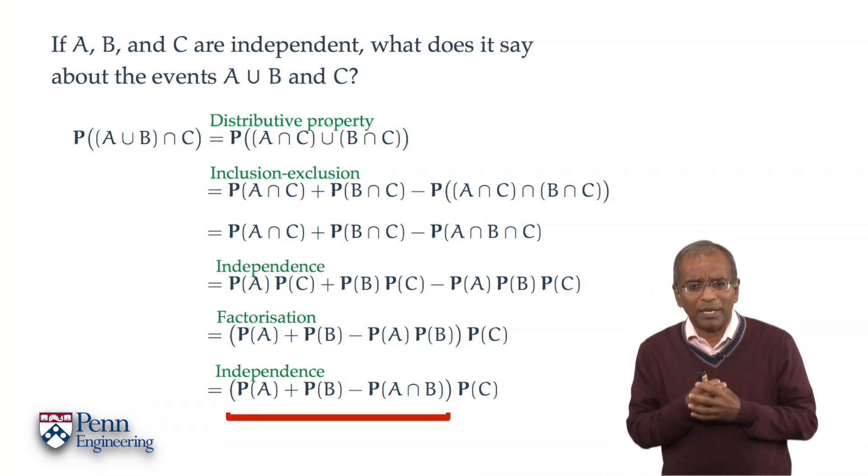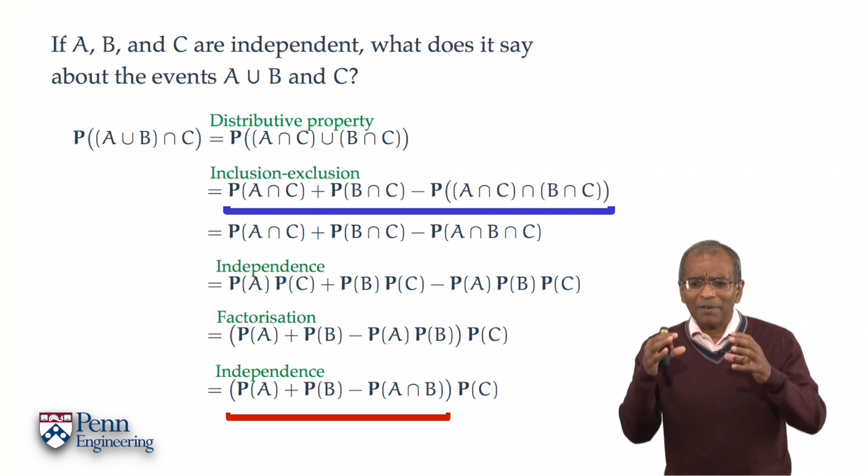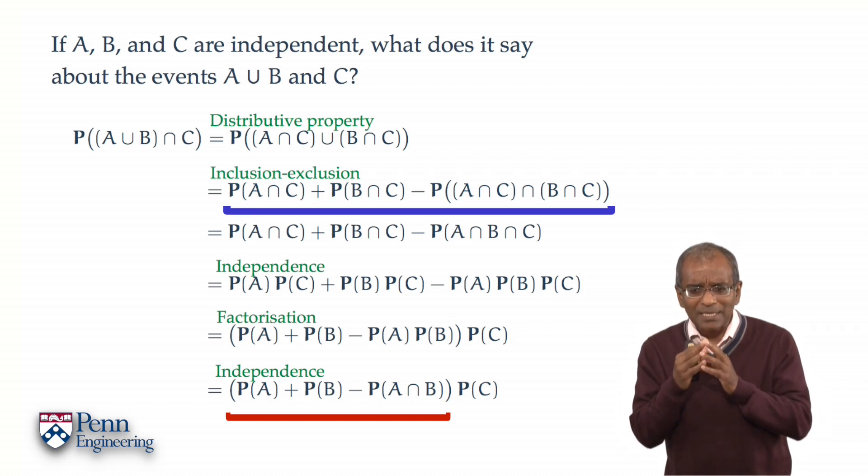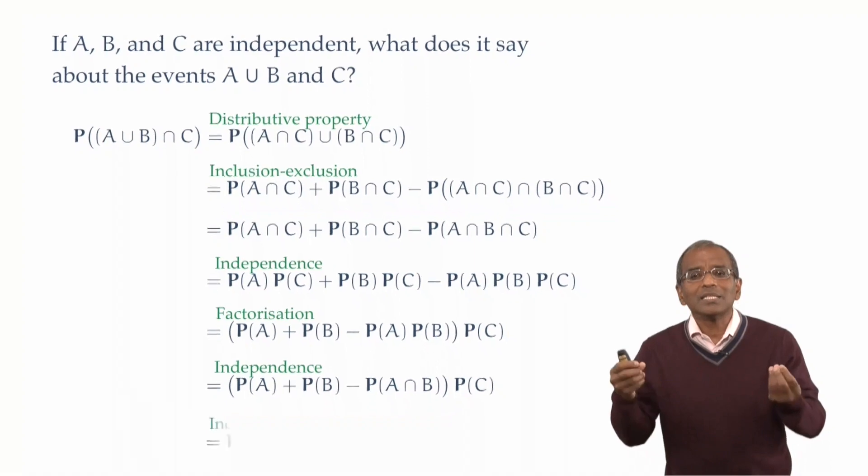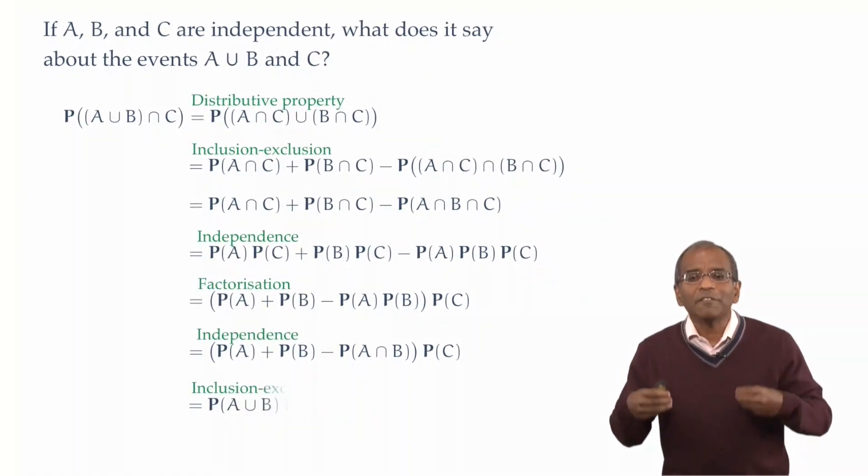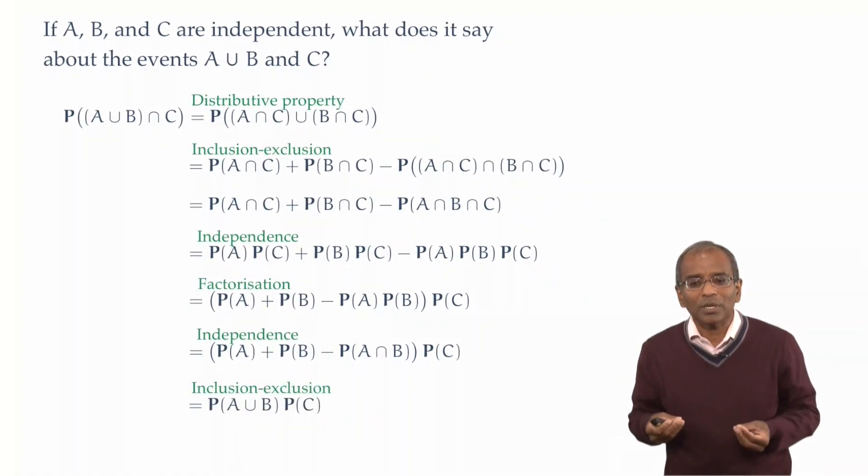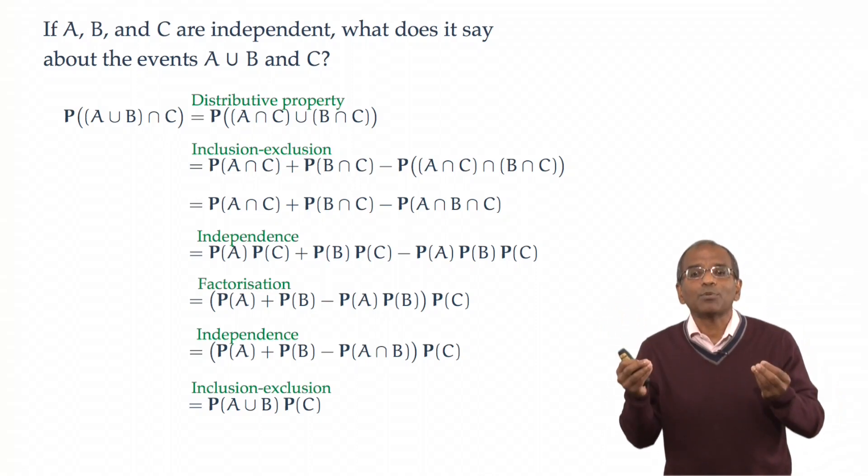Does that look familiar? Look at the second line. We have an expression just like that. And introspection tells us, ah, the thing in the round brackets represents a probability of a union. This was additivity via inclusion and exclusion. The term in round brackets is exactly the probability of A union B.